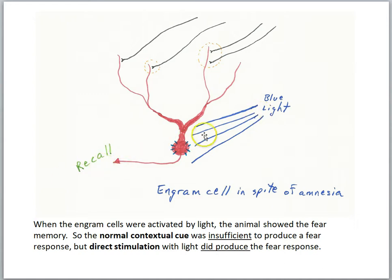It's as if we can trigger the memory by artificially activating this cell. It's just that the natural contextual cues were not sufficient to activate this cell.